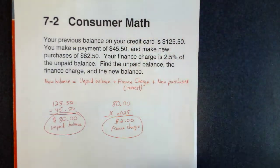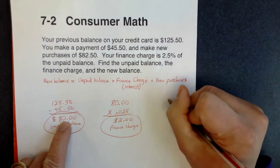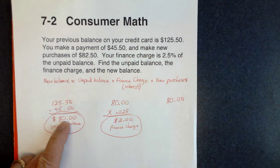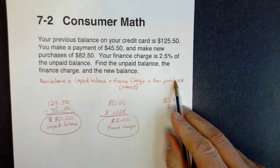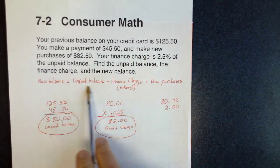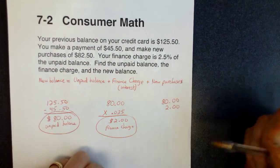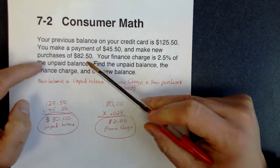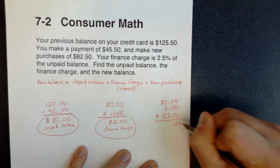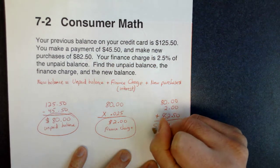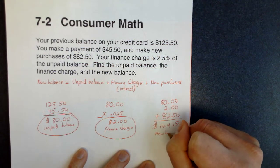The last thing we want is the new balance — that's all of the money we still owe the credit card company. For the new balance, we start with $80.00 because we still owe them $80.00, then add the $2.00 finance charge, and then put on our new purchases. We're following the equation: unpaid balance plus finance charge plus new purchases. New purchases are $82.50. Adding those all together gives us $164.50, and that would be your new balance on the credit card.